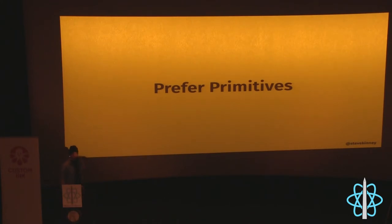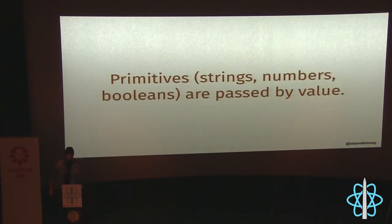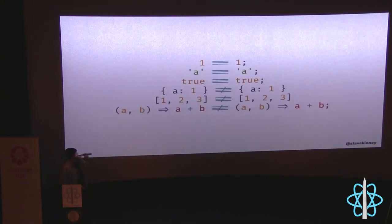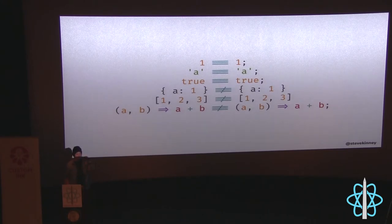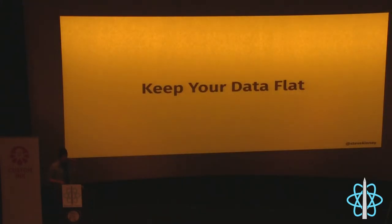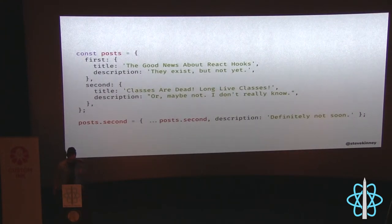Prefer primitives. Primitives — strings, numbers, booleans — are passed by value. Objects, arrays, and functions are passed by reference. That means `1 === 1` and `'a' === 'a'`, but two objects with the same properties are not the same because they are different memory addresses. Two arrays are not the same. Two functions are not the same. So if you set state with a new object, React sees it as a totally different thing and re-renders everything.